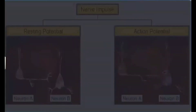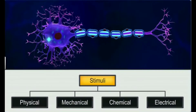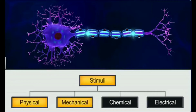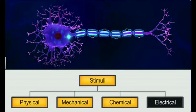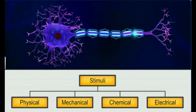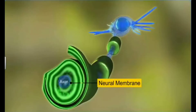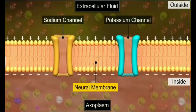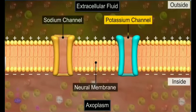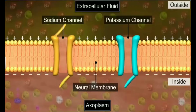Neurons are excitable cells; they may be stimulated by physical, mechanical, chemical, or electrical stimuli. The nerve fiber or axon is covered by a neural axonal or plasma membrane. The neural membrane has sodium and potassium ion channels called voltage-gated or regulated channels, which open or close according to the electric potential across the membrane.